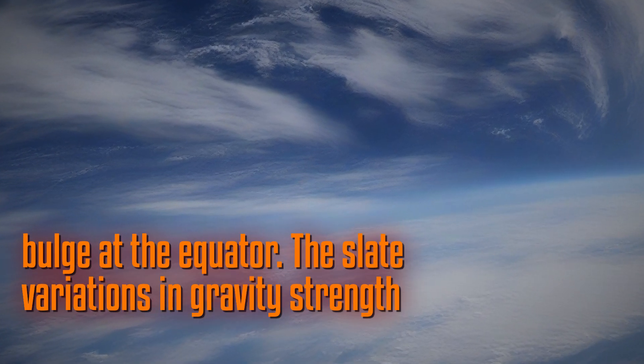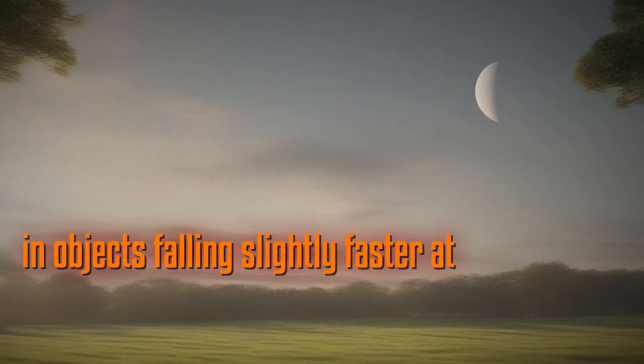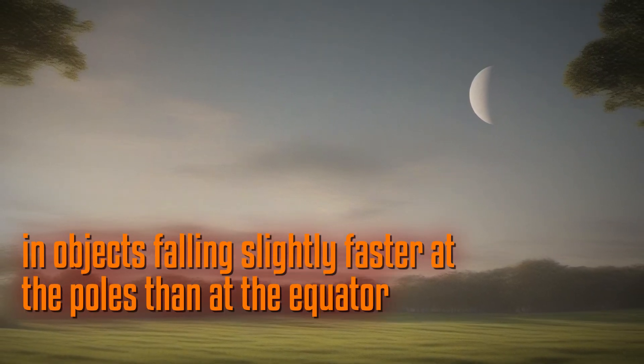The slight variations in gravity's strength between the poles and equator result in objects falling slightly faster at the poles than at the equator on Earth.